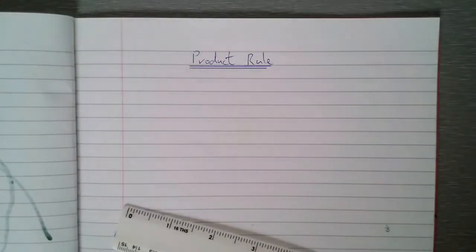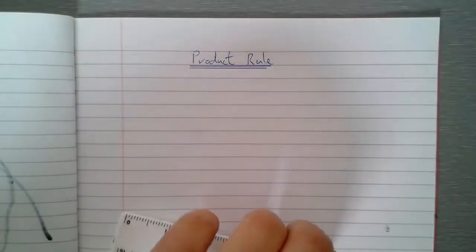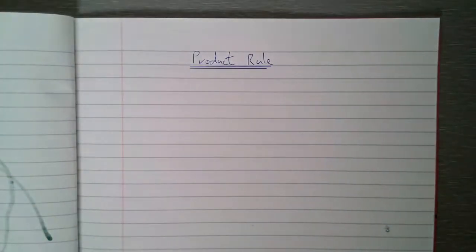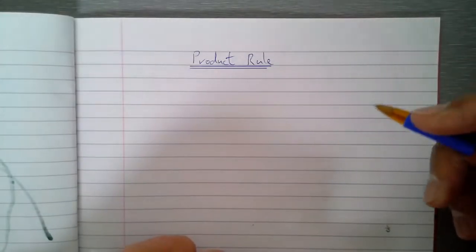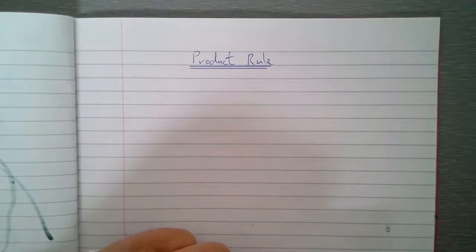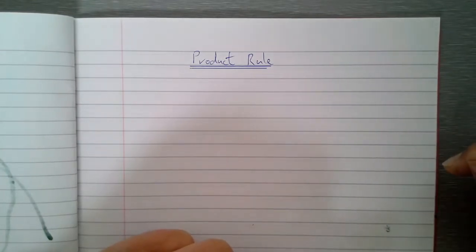Morning everybody. Yesterday we looked at using the chain rule to do some differentiation. The chain rule is to do with composite functions, it's to do with functions of functions. We used it really well yesterday to get some answers to some questions in a more efficient manner.